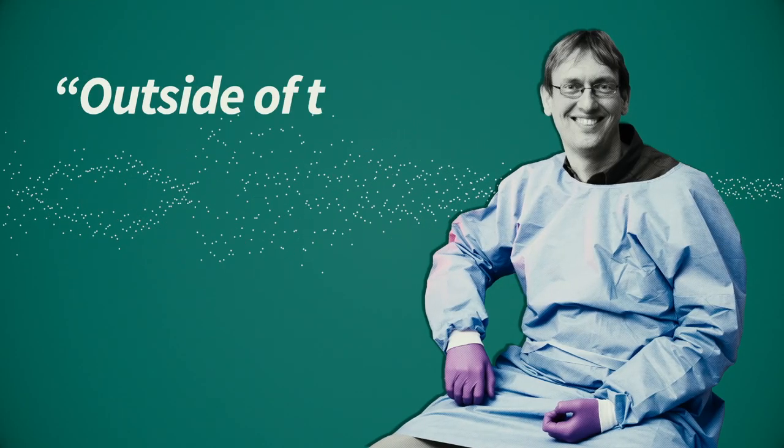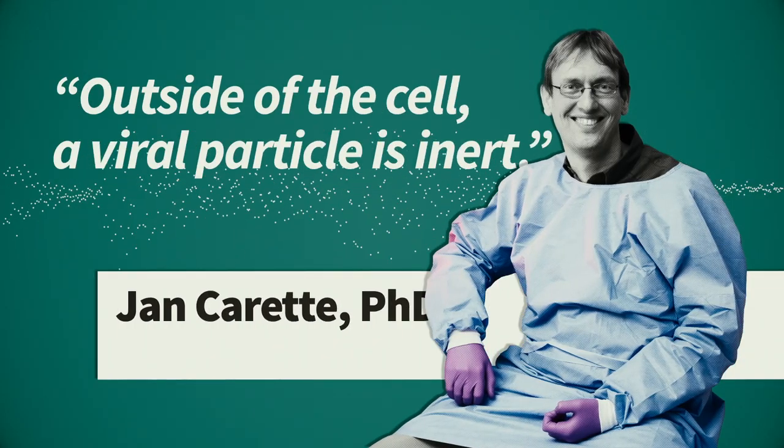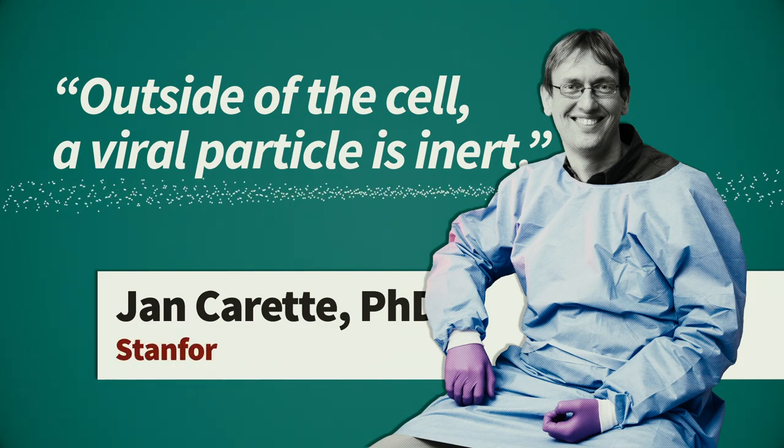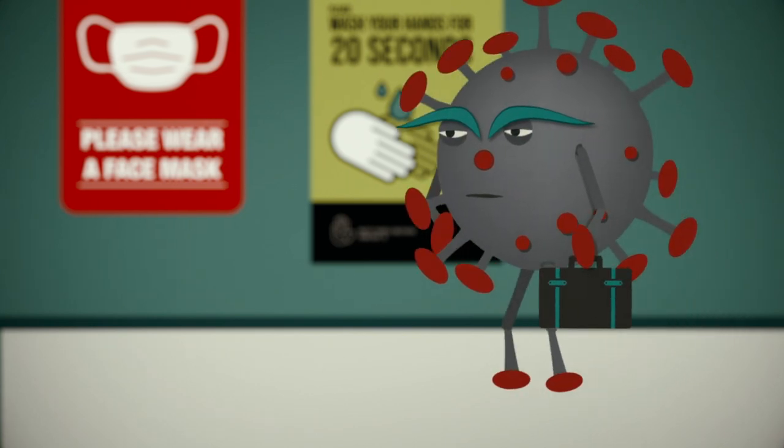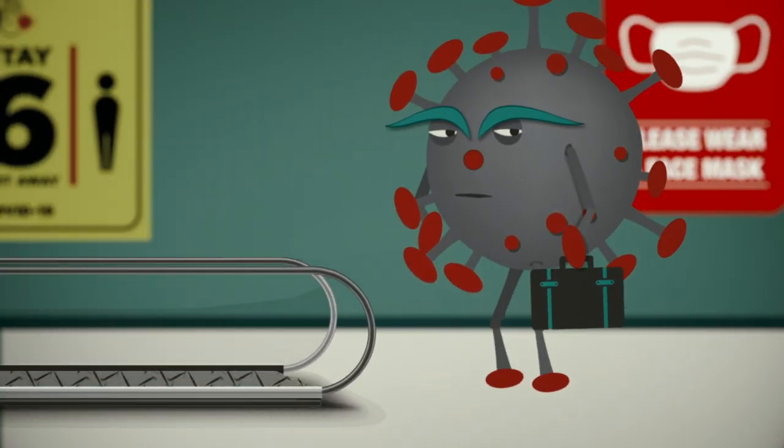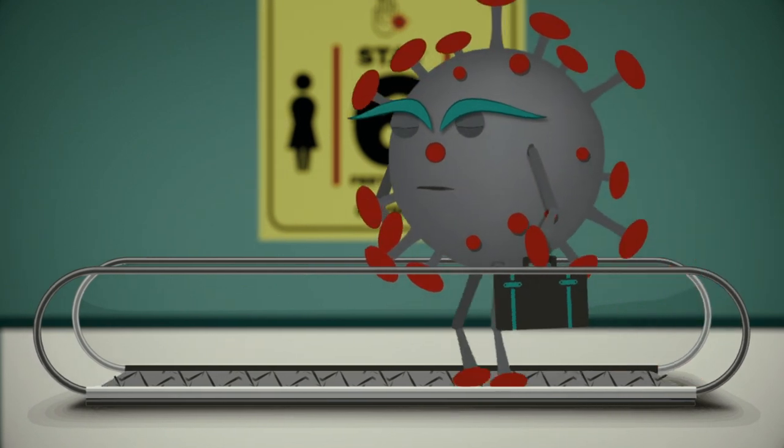Outside of the cell, a viral particle is inert. On its own, a virus can't reproduce itself, or for that matter, produce anything at all. It's the ultimate parasite.